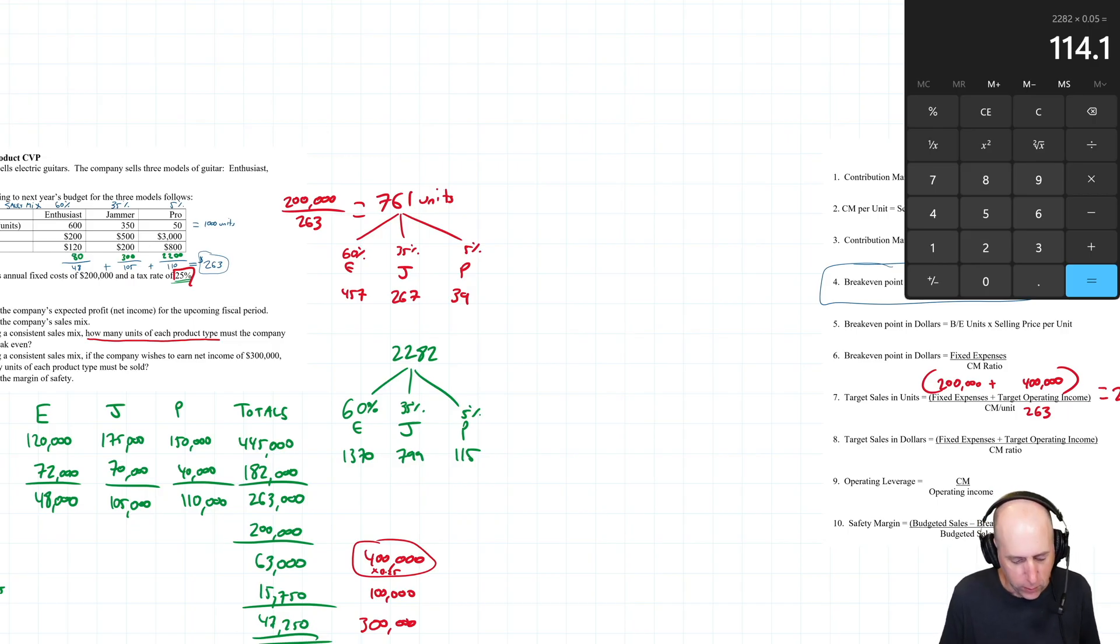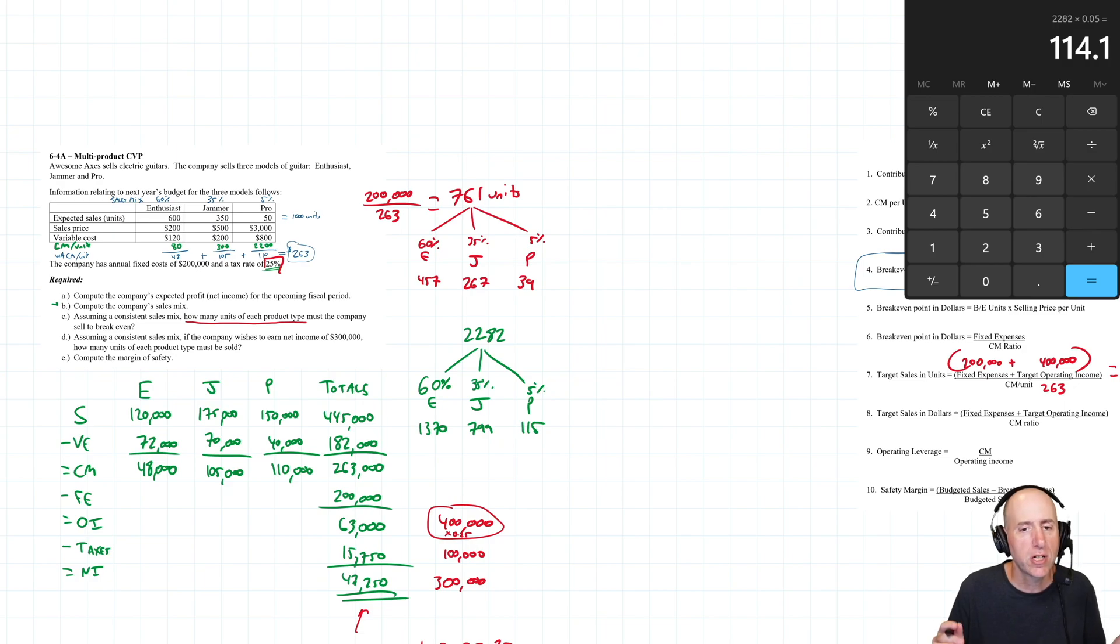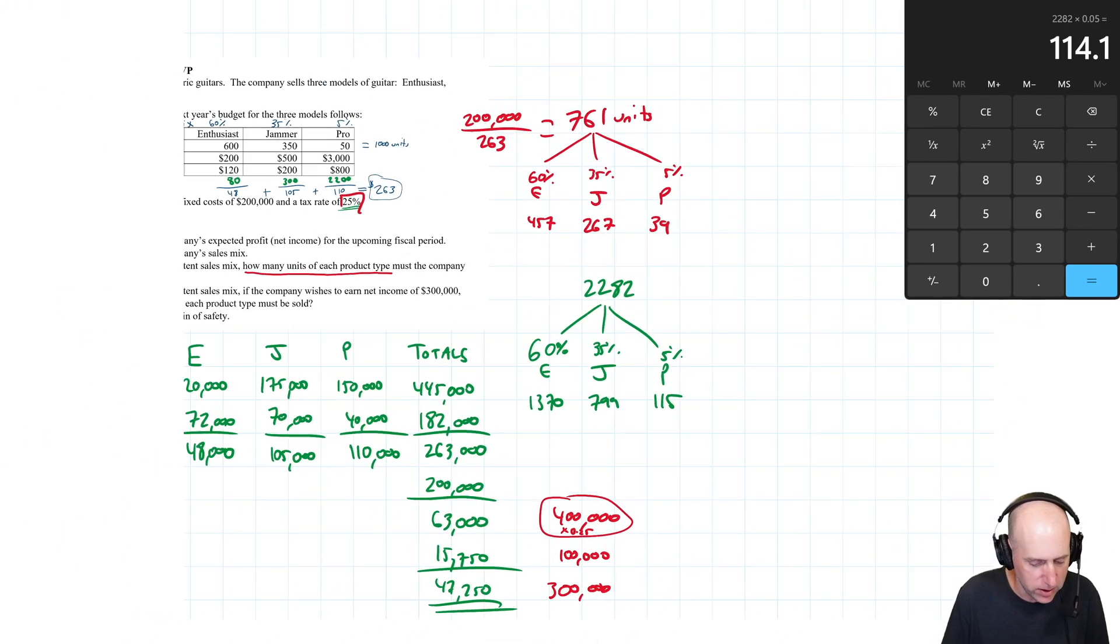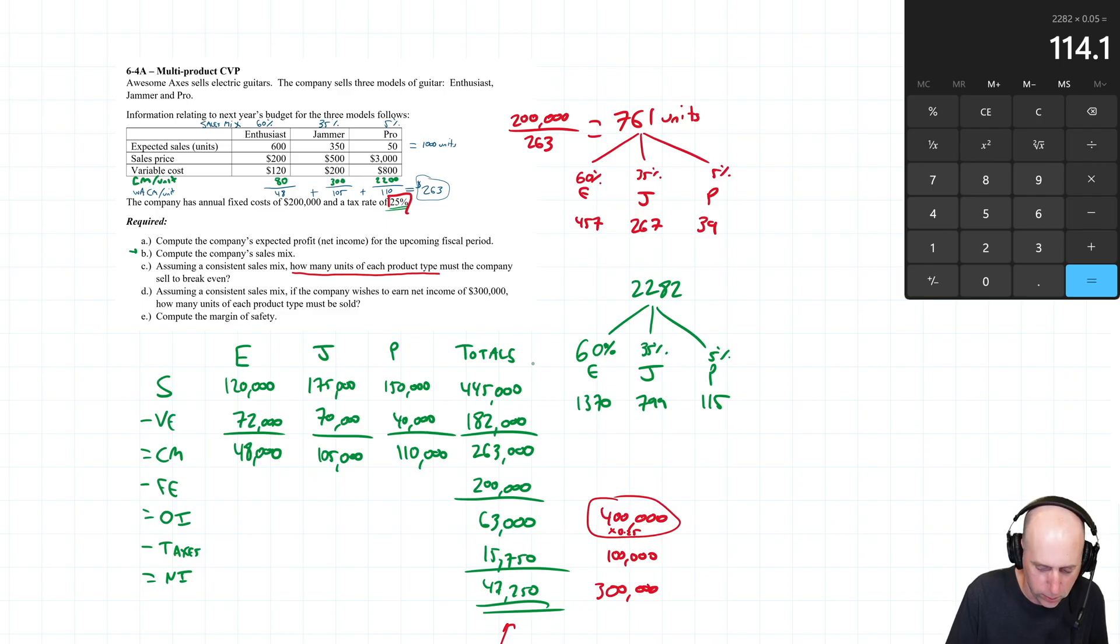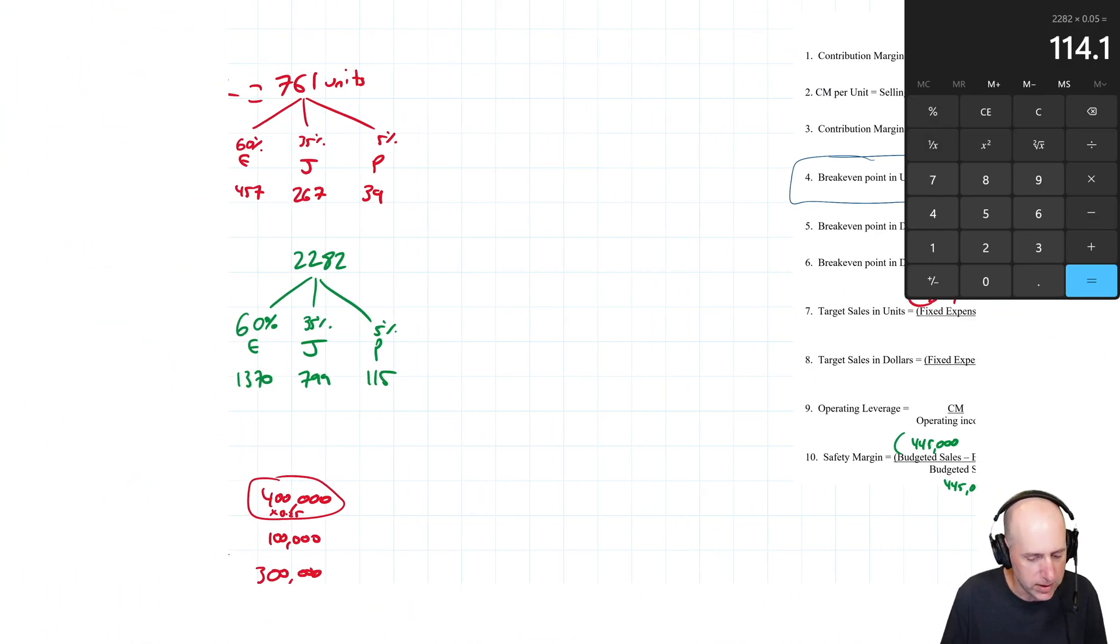Part E says compute the margin of safety. Margin of safety is budgeted sales minus break-even sales divided by budgeted sales. I've got budgeted sales in dollars from the income statement at the start - it's 445,000. So it's going to be 445,000 minus something divided by 445,000. We just have to plug in break-even sales in dollars.